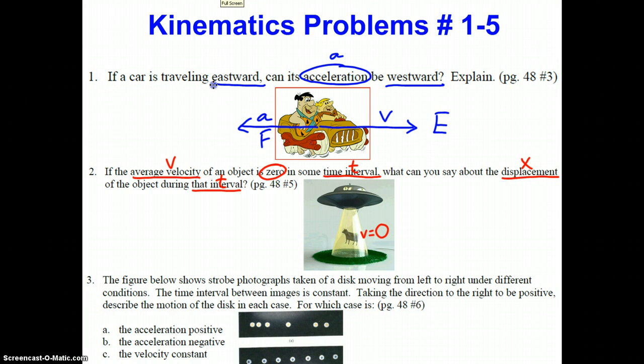So we have a cow suspended in midair being picked up by an alien spaceship, and the cow's velocity is zero. And this problem says that this average velocity is zero in some time interval, meaning it's not just an instantaneous, at this moment it's suspended, but that it's during some time interval that we'll call T.